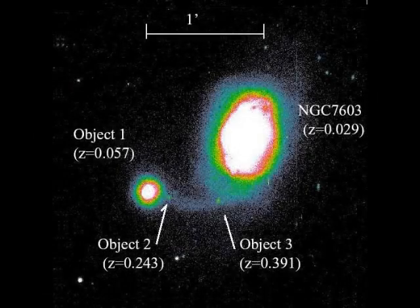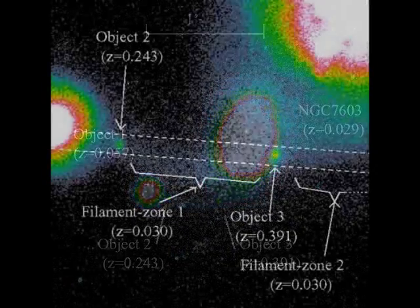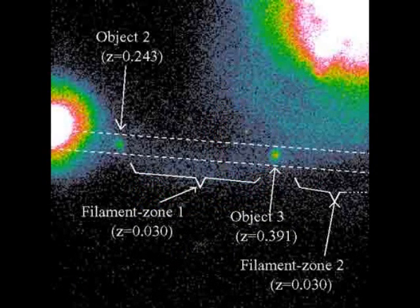Number nine, I'd like a plausible explanation for Galaxy Quasar Quartet NGC 7603. And don't act like you don't know what I'm talking about. Why?